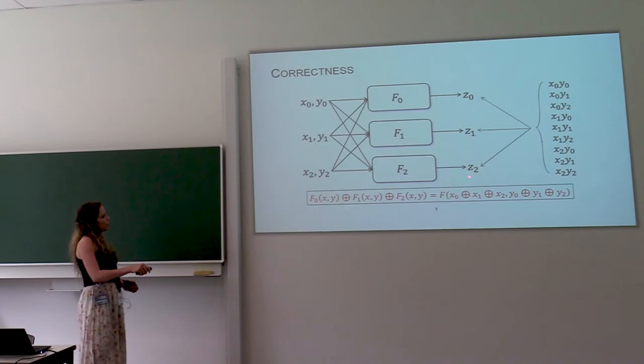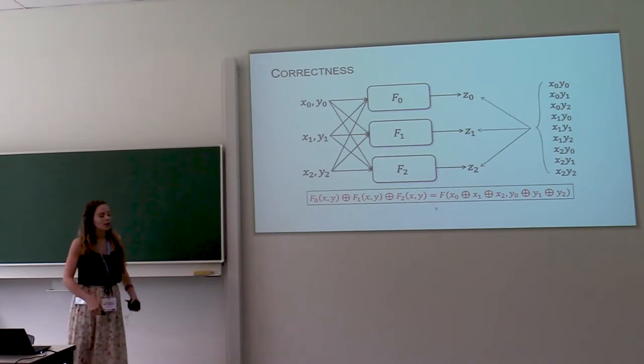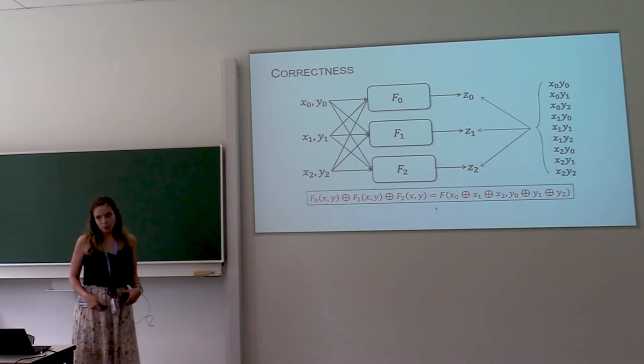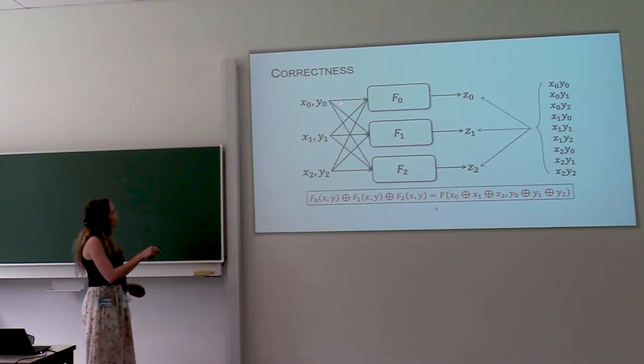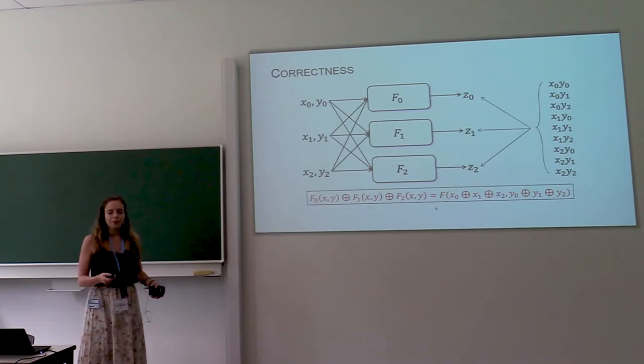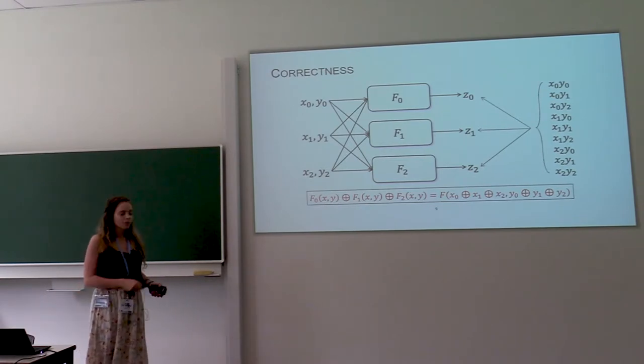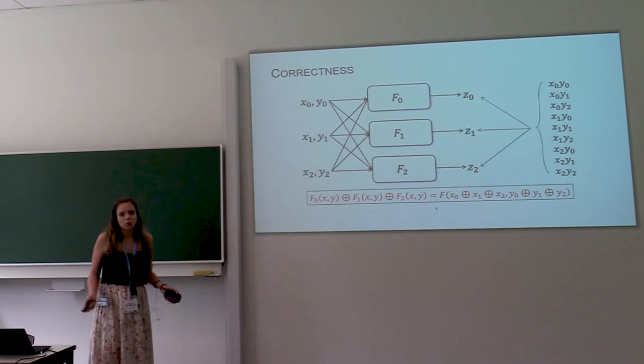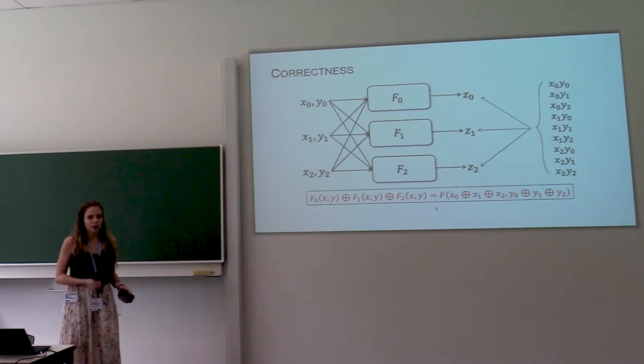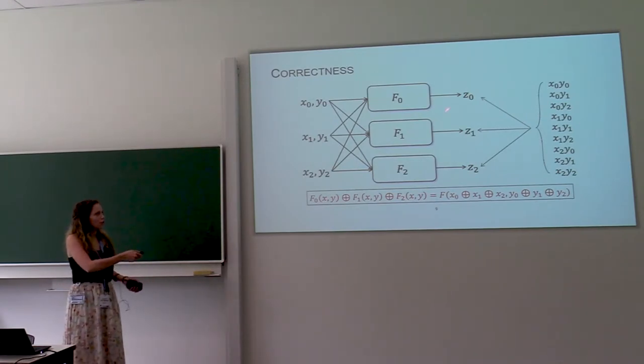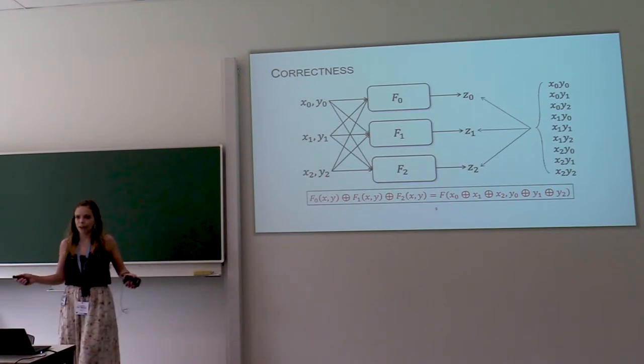It just means that if you sum the output shares of your masked implementation, it should be equal to your function applied to the sum of the input shares. Suppose that you want to implement a multiplication of x and y, and you have three shares for x and for y. That means that there are nine cross products that I list here. So to achieve correctness, all you have to do is make sure that all these cross products occur in one of the output shares. Yeah, so that's easy.